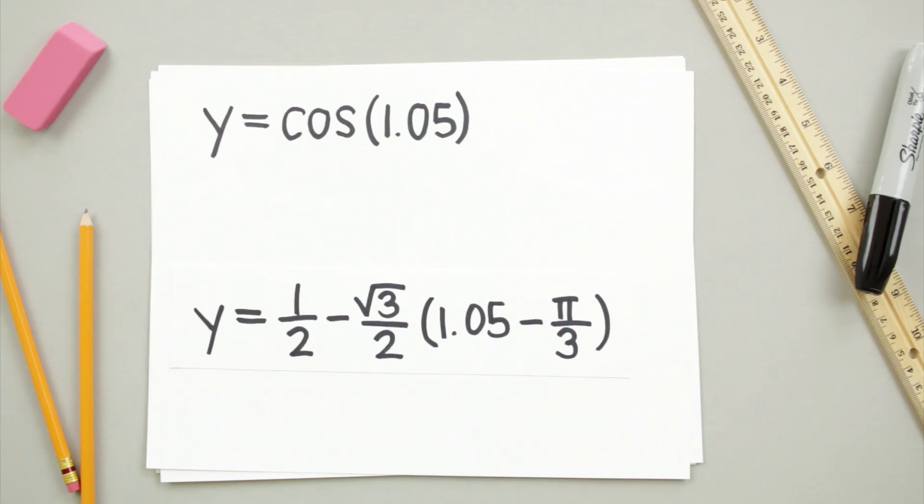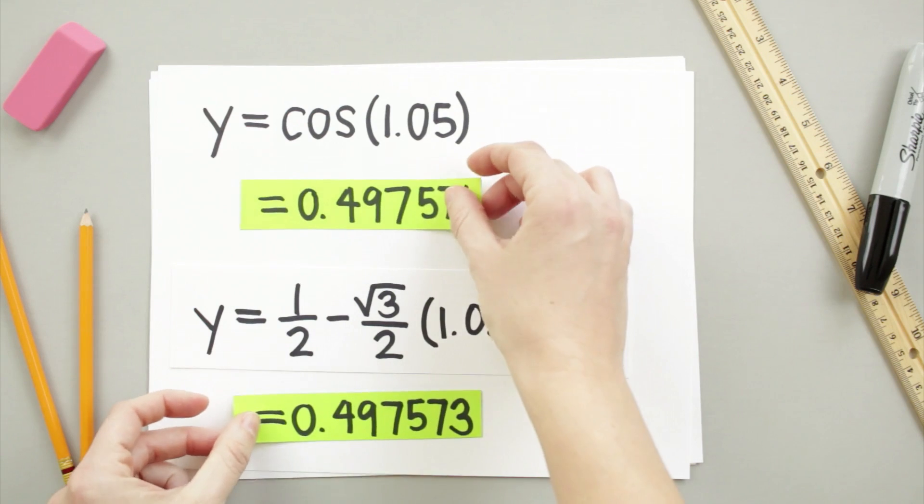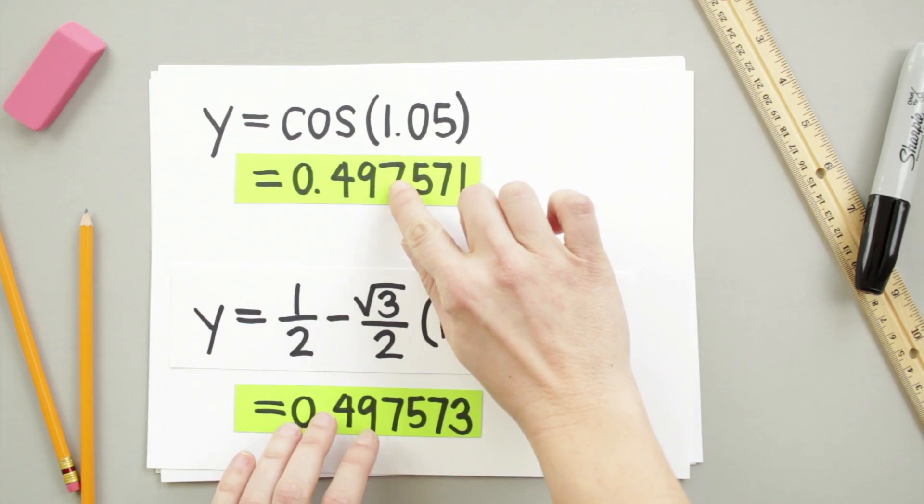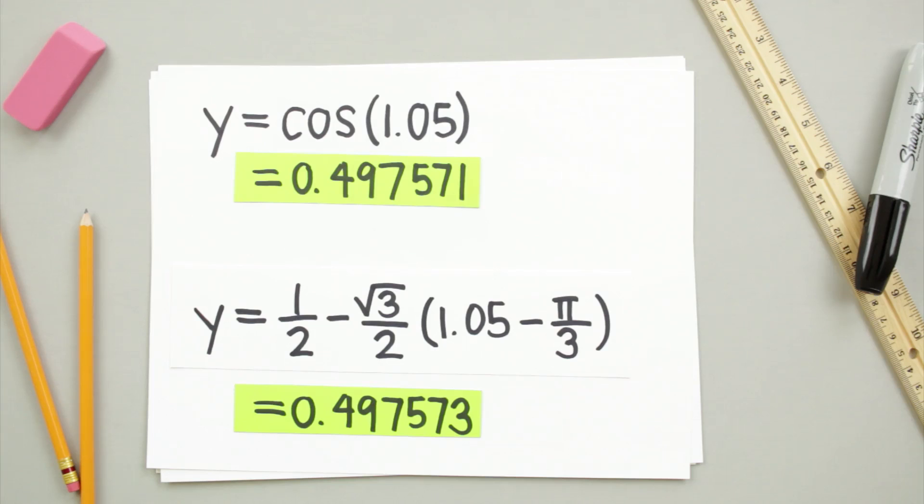The second equation may look harder, but without a calculator, the second equation is definitely easier to solve than the first one. Although the answer to the second equation won't be exactly equal to the answer to the first, the approximation made by the second equation could be good enough in a lot of circumstances.